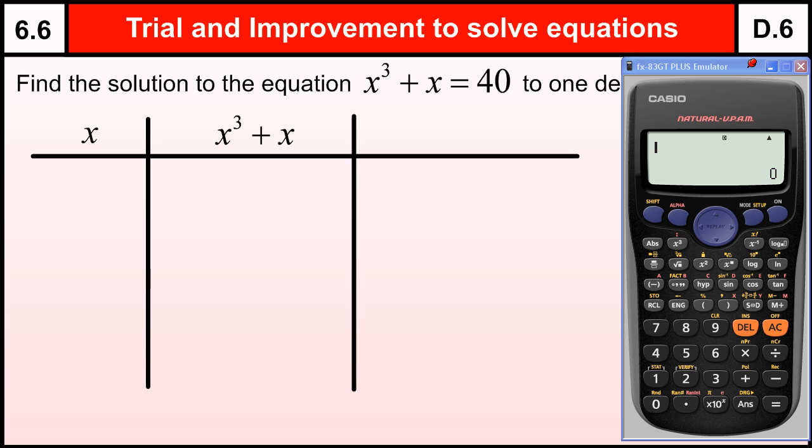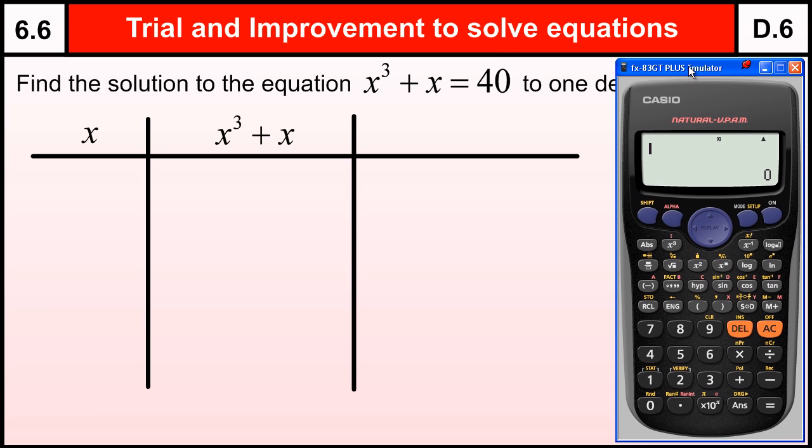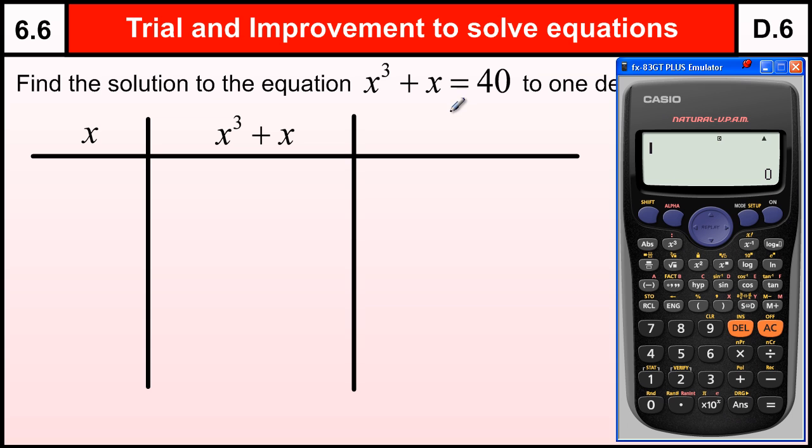But I'm going to go through the proper method for doing any trial and improvement question, so that you've got the whole idea, which is really usually a Grade C standard question. So here we go. We're just going to guess some values to work out the answer to this to one decimal place. So we want to know roughly, well we want to know to one decimal place what is the best answer for this equation.